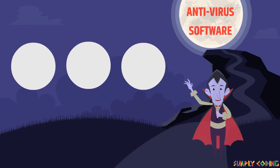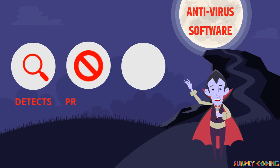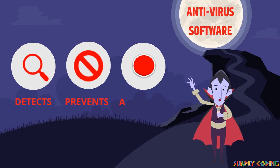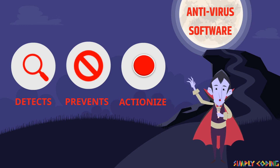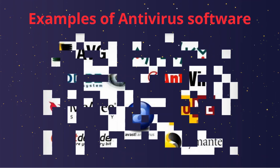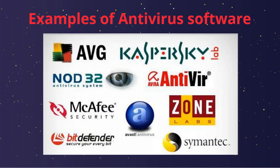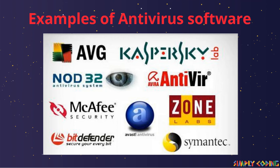Antivirus software is a computer program that detects, prevents, and takes action to disarm or remove malware. It continuously scans for different types of malware, and to be effective it must be kept up to date. Some examples of antivirus software are Microsoft Security Essentials, QuickHeal, Kaspersky, and McAfee.